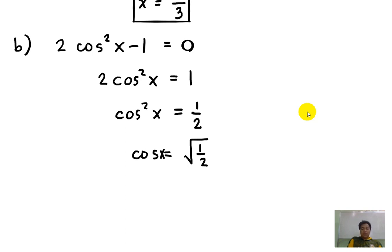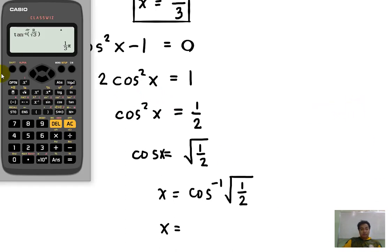So we can actually write square root of 1 half as square root of 2 over 2. Now we can solve for x. x is equal to cosine inverse of square root of 1 half. We know that x should be between 0 and pi over 2 as well. So we can actually directly use our calculators. There, pi over 4.